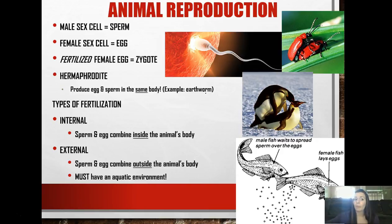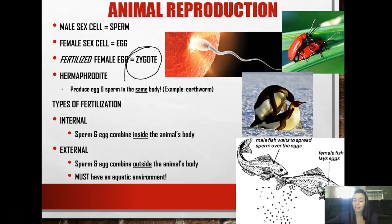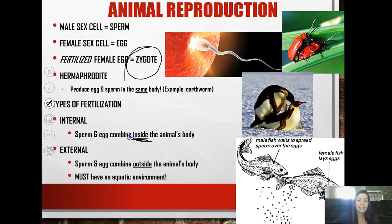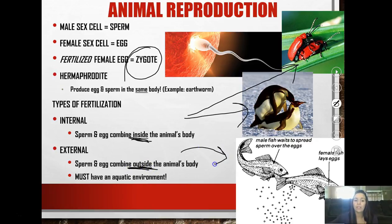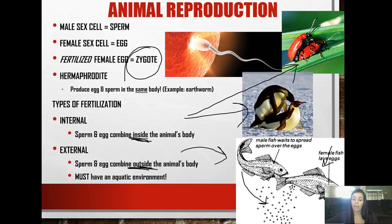When we talk about animal reproduction, you're probably familiar with sperm, egg, and zygote. A zygote is simply a fertilized female egg. A hermaphrodite is an organism that can produce both sperm and egg in the same body. There are two types of fertilization: internal fertilization is when the sperm and egg combine inside an animal's body. External fertilization is when the sperm and egg combine outside of the animal's body, and this usually has to happen in an aquatic environment. The female lays her eggs, the male drops sperm on the eggs, and they're fertilized and grow into new fish.